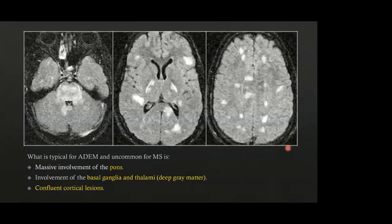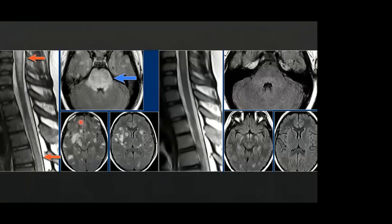The brain lesions in ADEM are distinct from MS. ADEM can show massive involvement of the brainstem, particularly the pons, which is not usually seen in MS. Involvement of deep gray matter — basal ganglia and thalami — is common in ADEM and uncommon in MS. Large confluent cortical lesions may be seen in ADEM, versus smaller juxtacortical lesions in MS. A patient with ADEM is shown with massive pons involvement, right-sided basal ganglia and thalami involvement, confluent cortical-based lesions, long-segment cervical-thoracic cord involvement, and follow-up after four weeks showed interval resolution.